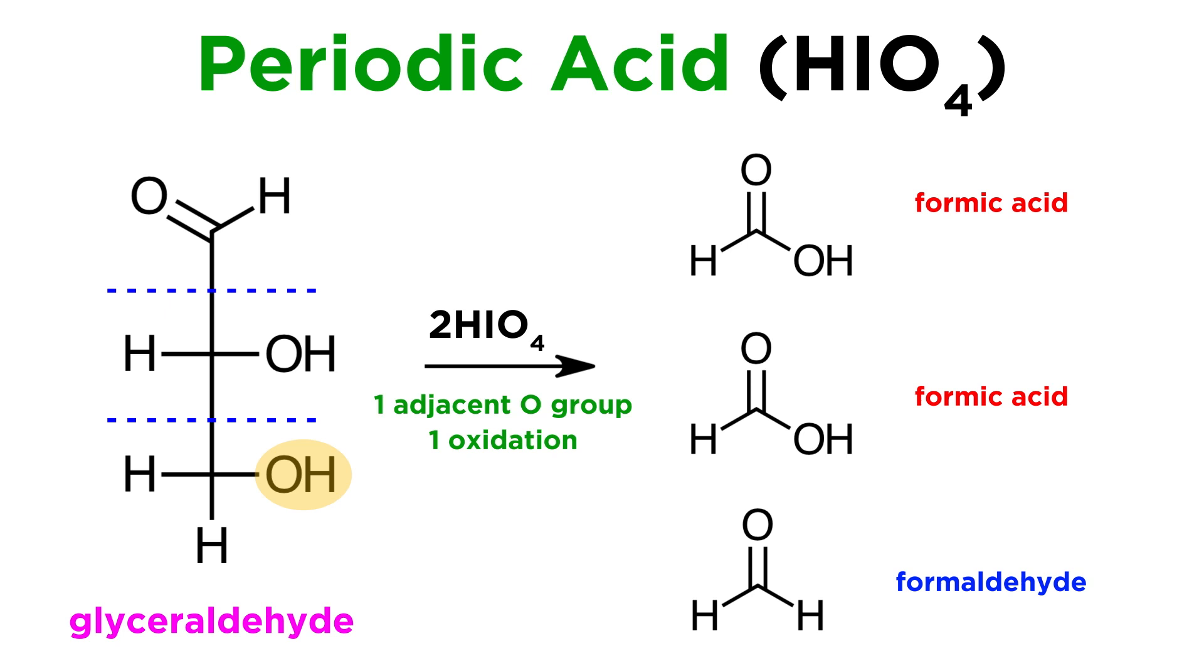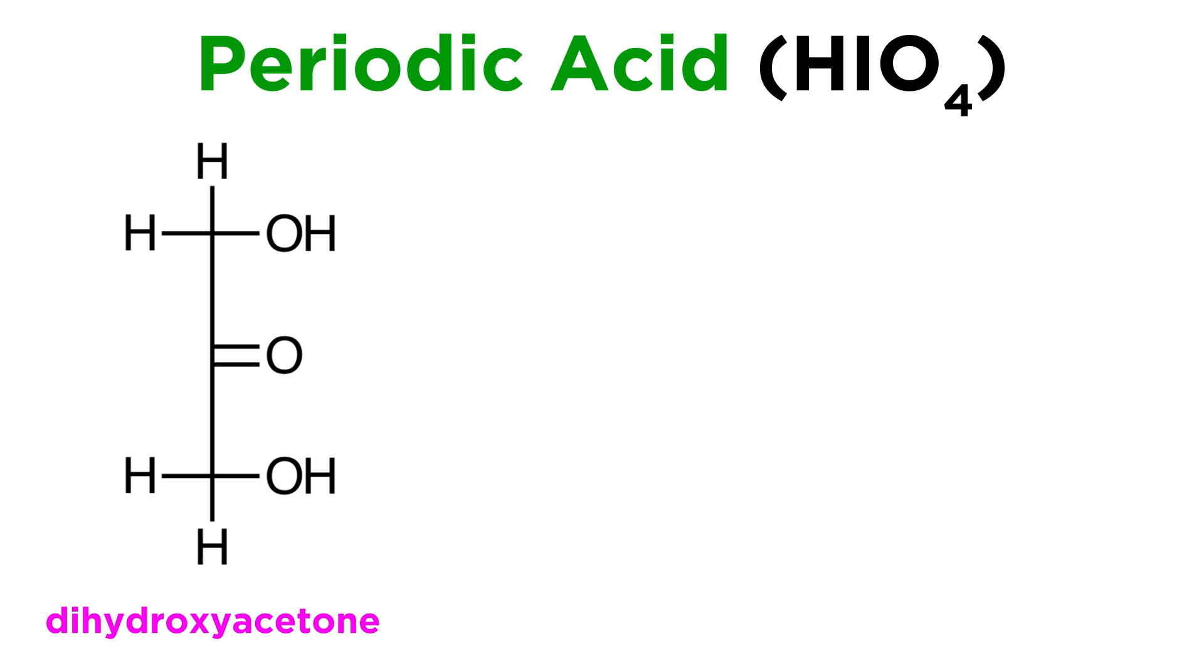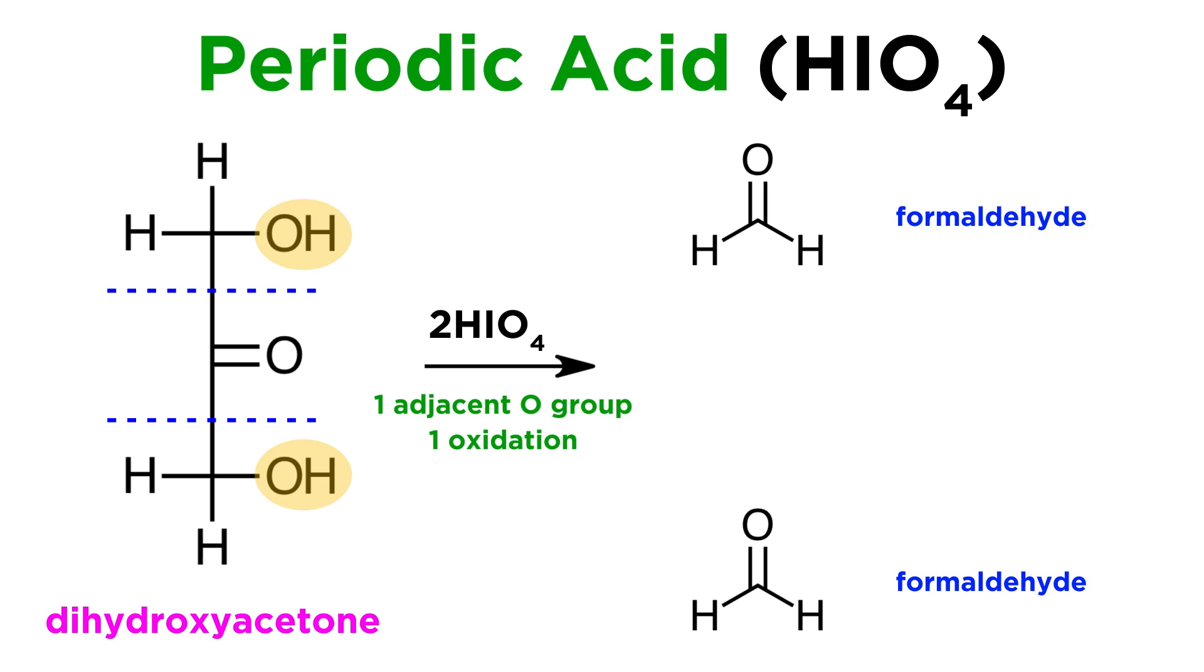Now consider something like dihydroxyacetone. This has three oxygen-containing functional groups. The hydroxyls on either end have one carbonyl next door, so these are each oxidized once to give formaldehyde. But the ketone has two hydroxyls adjacent, one on either side, so this must be oxidized twice, meaning this will produce carbon dioxide.